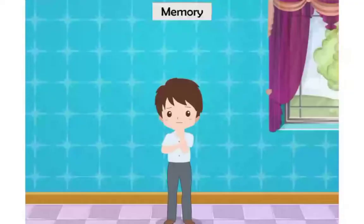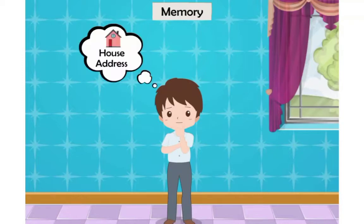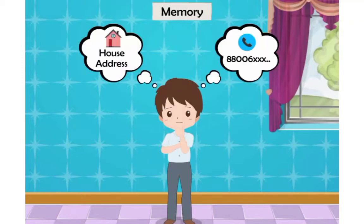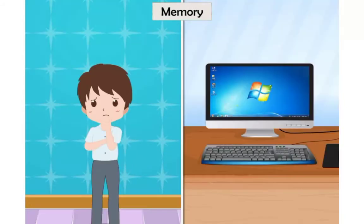Memory: We remember many things, like our house address and parents' mobile number in our mind. Whatever we remember is called our memory. The way we remember things in our mind, a computer also remembers data in its memory.